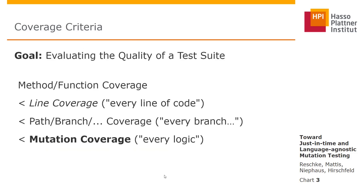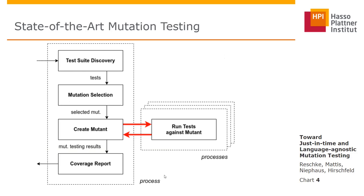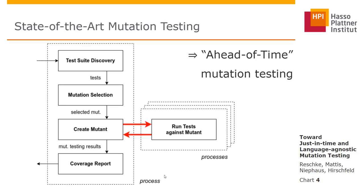Now let's take a look at how mutation testing tools generally run nowadays. They consist of five steps. First, you discover the tests for the module. Then you select mutations you want to consider. Then you create mutants — a state of the application code with a fault introduced — and use this in a separate process to run tests against. Notice that only the static representation of the code is used to create the mutant, and the mutant is also evaluated in a separate process, causing overhead such as VM ramp-up time and recompiling the module. We refer to this approach as ahead-of-time mutation.